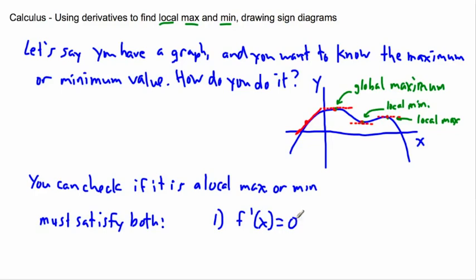That's really useful. So if you're just given an equation for something and you want to find where the max or min is, you just find where the derivative is zero. But that's not enough — it turns out you have to also have something else.